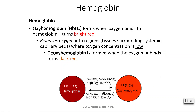We have two options with regard to hemoglobin: we can have oxygen bound to hemoglobin, or hemoglobin that doesn't have any oxygen bound to it. When oxygen is bound to hemoglobin, we call it oxyhemoglobin — HbO2 — and oxyhemoglobin would be bright red. When the hemoglobin releases the oxygen into the tissues and cells, we form deoxyhemoglobin. Deoxyhemoglobin is a darker, more dull red color. So we have our bright red and our dull red depending on whether oxygen is present.